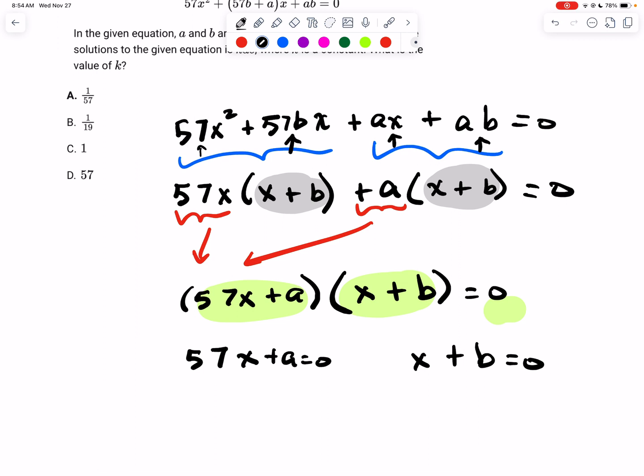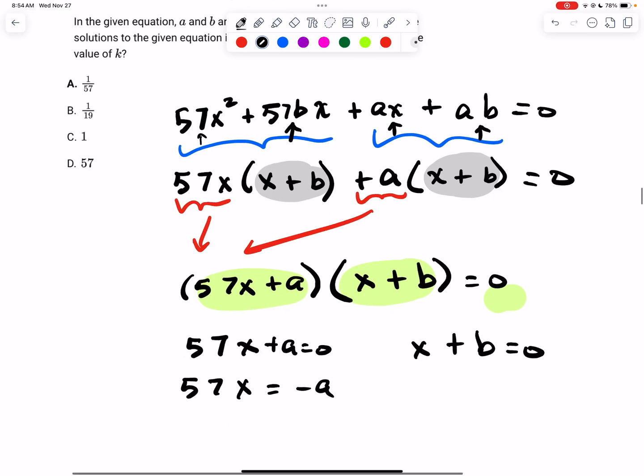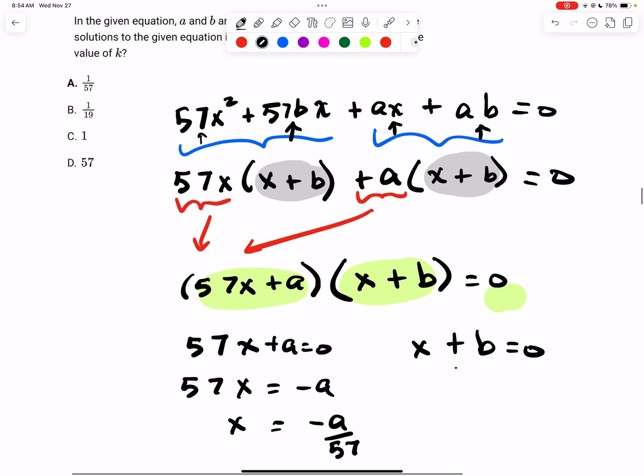So now we can go ahead and say that 57x is equal to negative a, and that x is equal to negative a over 57. And that's one of our solutions. The other solution, subtract b from both sides, and we get that x is equal to negative b.